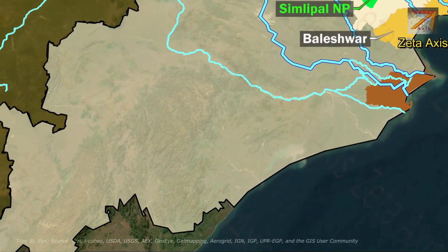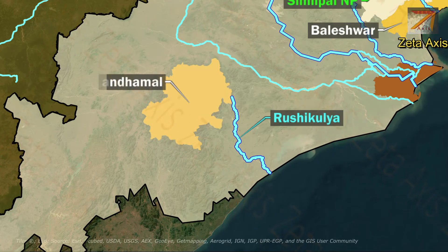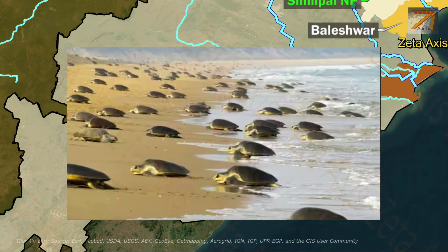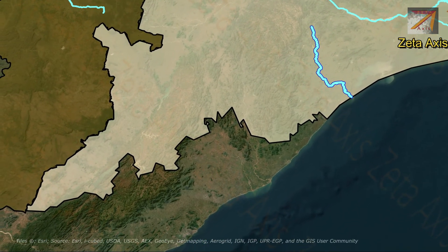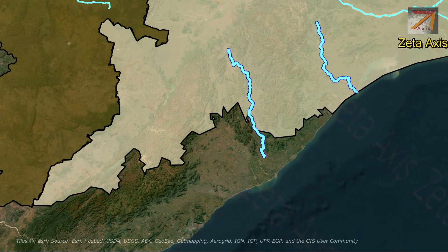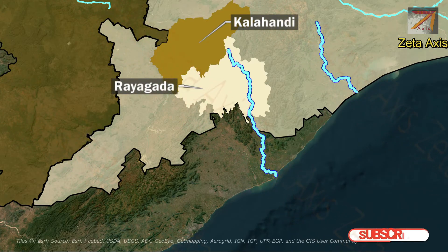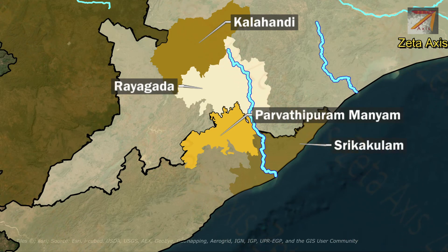The next important river is the Rushikulya, which originates in Kandhamal district of Odisha and flows into Ganjam district where it meets the Bay of Bengal. The place where it originates is called the Kashmir of Odisha. The Rushikulya river mouth is an important breeding ground for Olive Ridley sea turtles. The Vamsadhara river, important to both Odisha and Andhra Pradesh, originates on the borders of Rayagada and Kalahandi districts of Odisha, then enters Andhra Pradesh in Parvathipuram district.